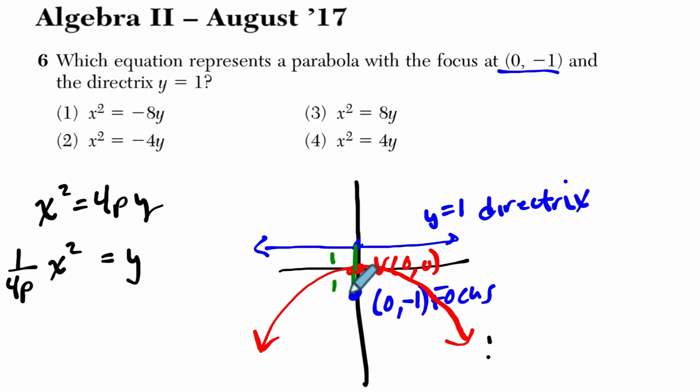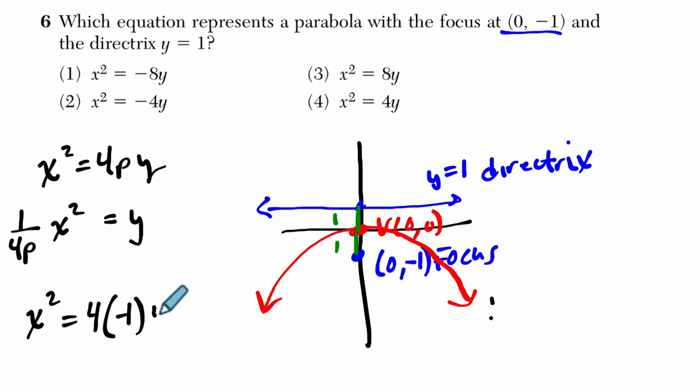And if the parabola opens downwards, p is negative. So I just plug that into our equation. In the first equation here, x squared equals 4 times p, which is negative 1, right? Times y. And I get x squared equals negative 4y, which is choice 2.